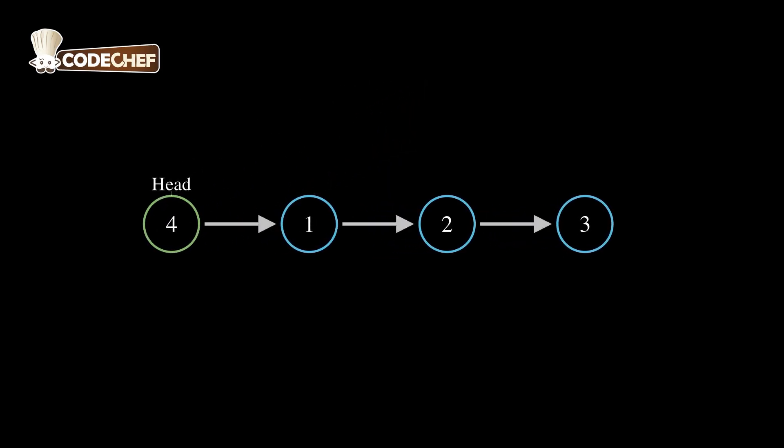The new node with the value 4 is now at the beginning of the linked list. The updated list is 4, 1, 2, 3. Now, let's look at the code implementation of this operation.